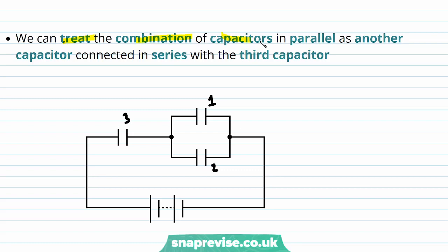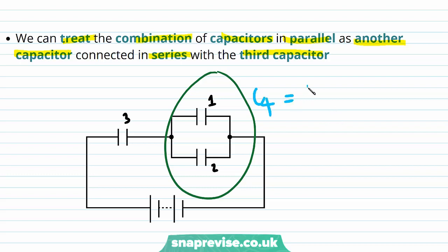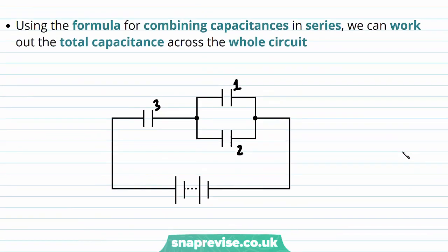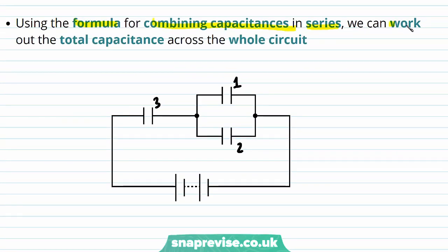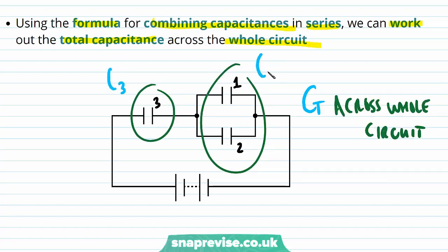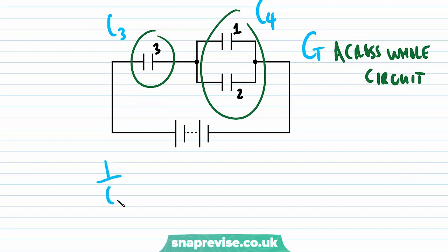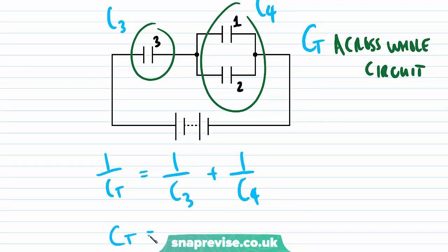Now we can treat this combination of capacitors in parallel as another capacitor connected in series with the third capacitor. So if we imagine the two parallel capacitors combining into one capacitor with capacitance C4, where C4 = C1 + C2, and it's connected in series with C3, then using the formula for combining capacitance in series, we get 1/Ct = 1/C3 + 1/C4, so Ct = (1/C3 + 1/C4)⁻¹.